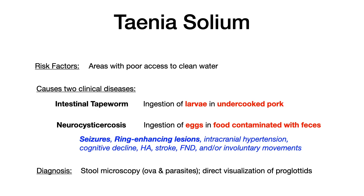Let's start with Taenia solium. Risk factors include areas with poor access to clean water. Clinically, this causes two different diseases: the intestinal tapeworm and neurocysticercosis. The intestinal tapeworm causes vague, asymptomatic or mild non-specific GI symptoms. The intestinal form of the disease is caused by ingestion of larvae, typically in undercooked pork.